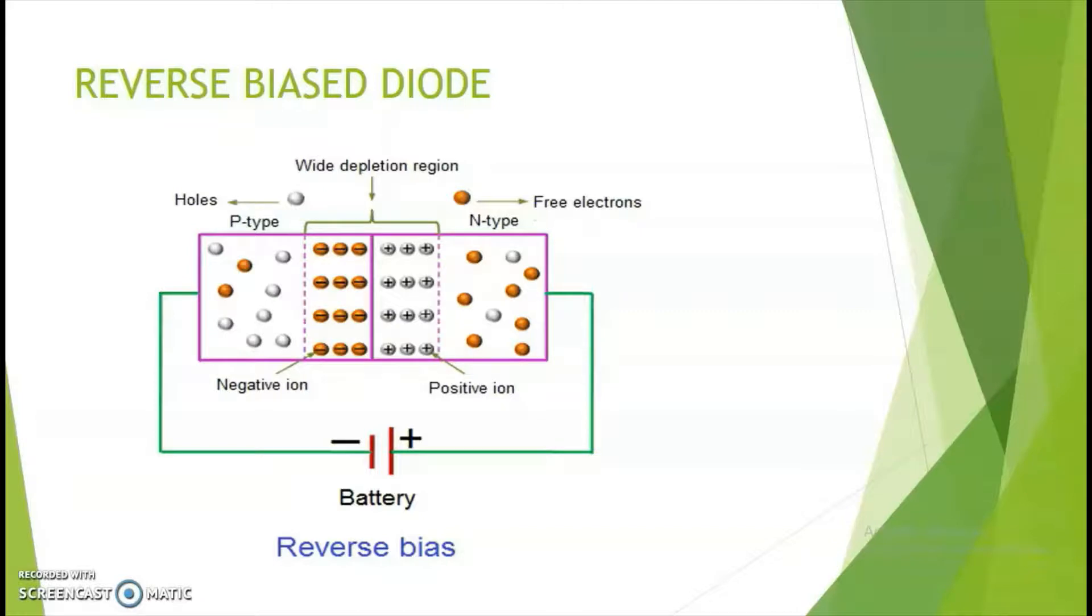When the diode is reverse biased, the negative terminal is connected to P-type and the positive terminal is connected to N-type. The holes which are majority carriers here are attracted to the negative terminal and the electrons are attracted towards the positive terminal. Since it does not complete the circuit, there will be no current flow.